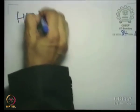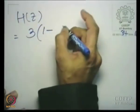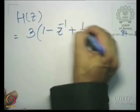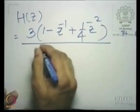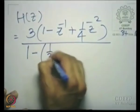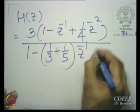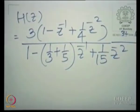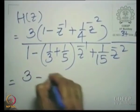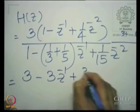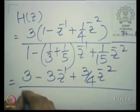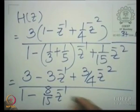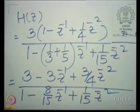H(z) is clearly 3 times (1 minus 2 times one-half z-inverse plus one-fourth z to the power minus 2) divided by (1 minus one-third plus one-fifth z-inverse plus 1/15 z to the power minus 2). That expands to (3 minus 3z-inverse plus 3/4 z to the power minus 2) divided by (1 minus 8/15 z-inverse plus 1/15 z to the power minus 2).